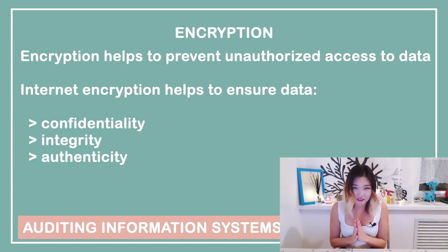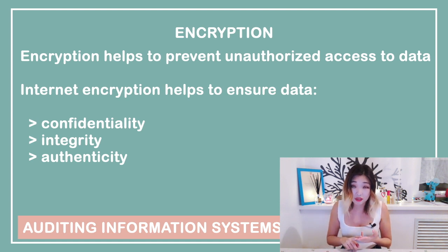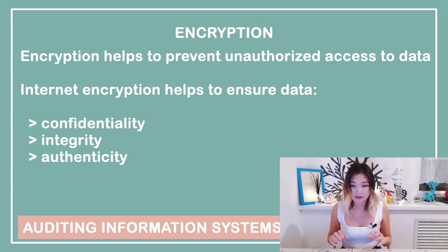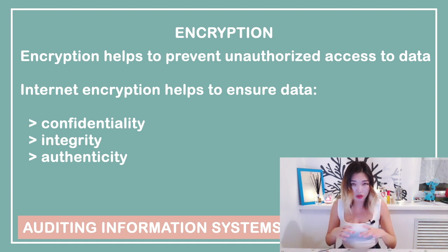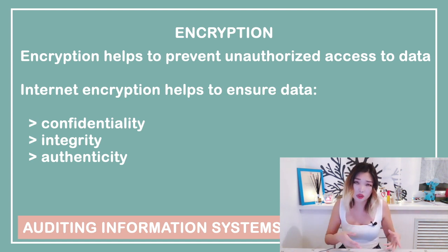Encryption is a fascinating topic, though in this video I will only touch on it lightly. Encryption mechanisms are put in place to ensure data confidentiality, integrity, and authenticity. Since we are talking about encryption as a kind of preventive control, let's say it prevents unauthorized access to data. For example, when you are sending an email, you are essentially sending data over the internet, which is inherently an unprotected network. So it is important to use encryption to avoid unauthorized access to your data by a third party.